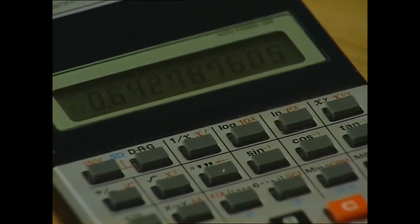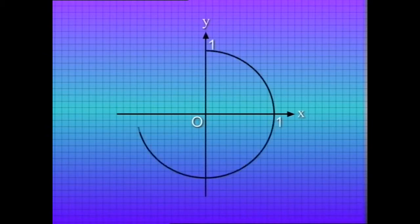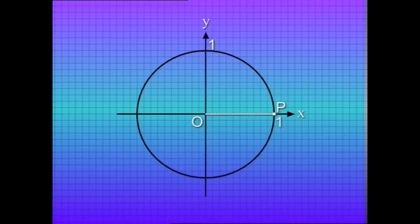Yes, that's correct. But how is the actual calculation done? The precise values of trigonometric ratios are calculated using maths at a higher level. Approximate values can be worked out more easily by a graphical method. On graph paper we draw a circle with a radius of one unit. On the x-axis we have a radius OP, then we rotate OP around the center O in the counterclockwise direction through an angle theta.